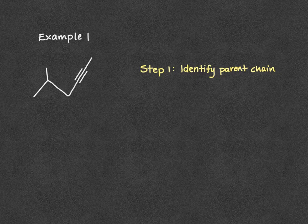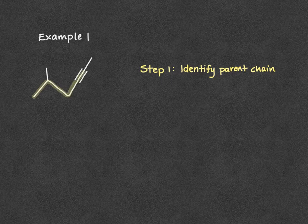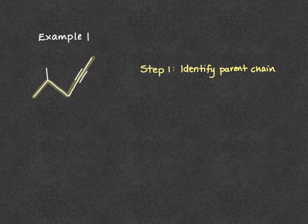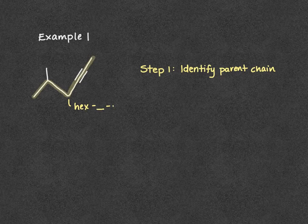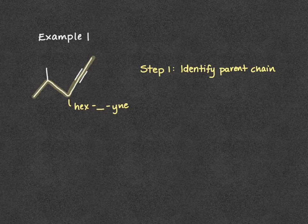Our first step here is going to be to identify our parent chain. I'm going to highlight our parent chain in yellow. It must contain our triple bond. So we see our parent chain there and it has one, two, three, four, five, six carbons. So our parent chain is going to be hex and then some number to identify where the triple bond is, yne. The suffix y-n-e means triple bond.